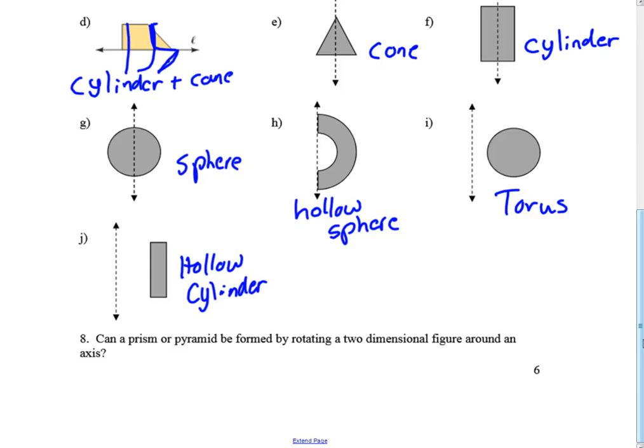All right, so that's lesson one. We'll start getting into volume and surface area in the next one, but we needed to start off by looking at these cross sections and these rotations. Let's keep going — see you soon.